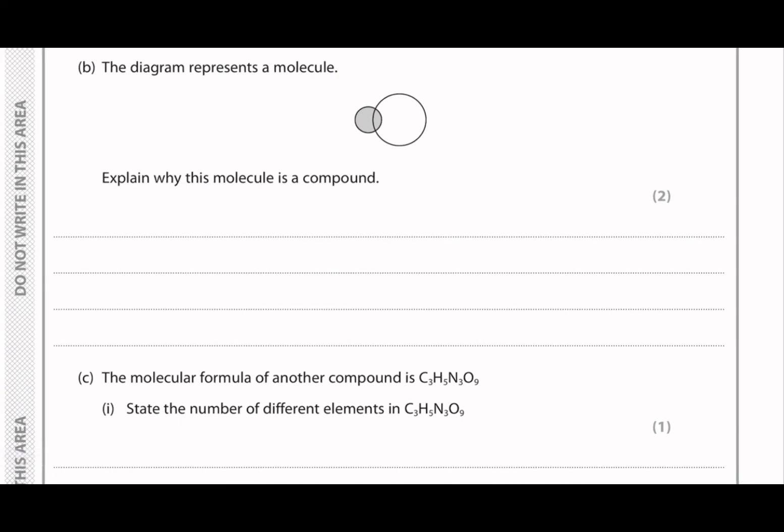Moving on to part B of this question. So the diagram represents a molecule, and they ask us to explain why this molecule is a compound. So the definition of a compound is when it is a pure substance and is made up of two or more elements chemically bonded.